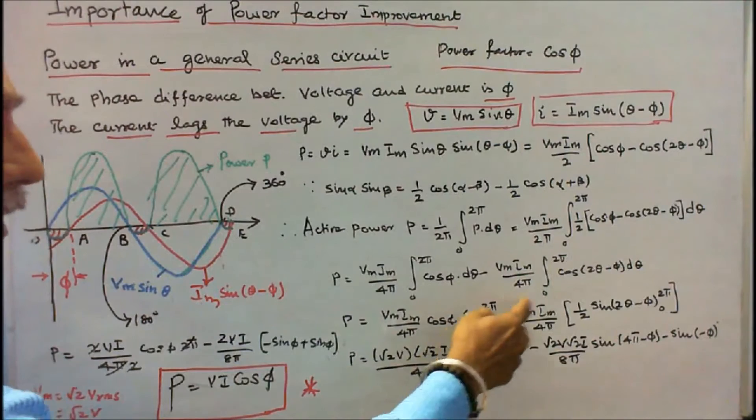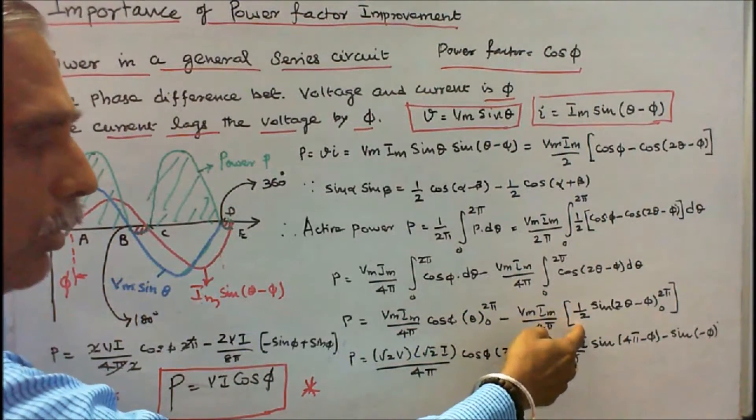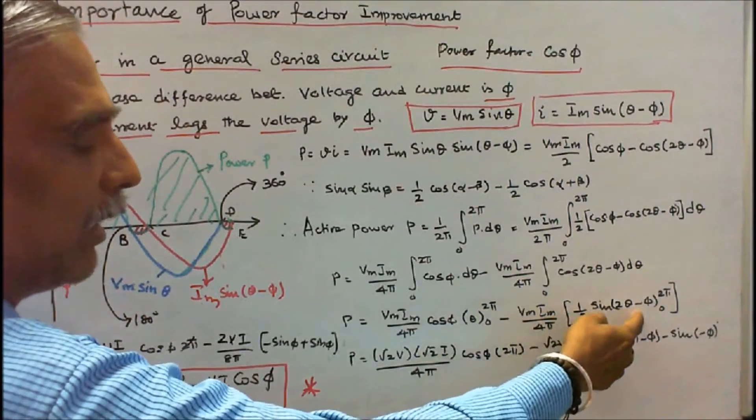Minus (Vm Im / 4π) times (1/2) sin(2θ - φ), limits 0 to 2π.